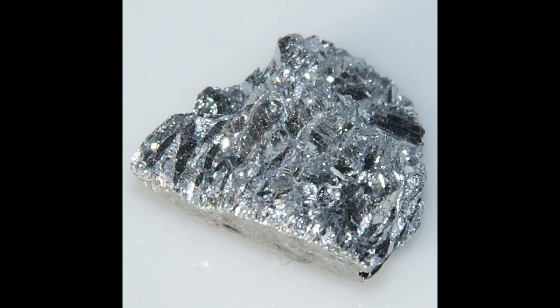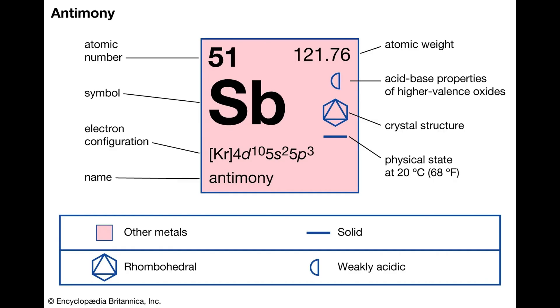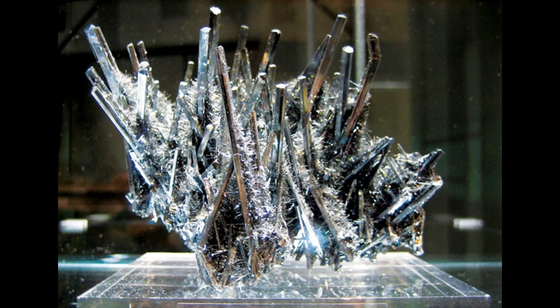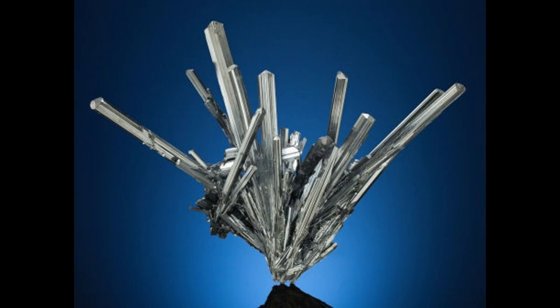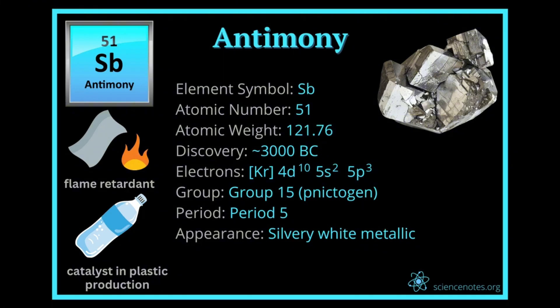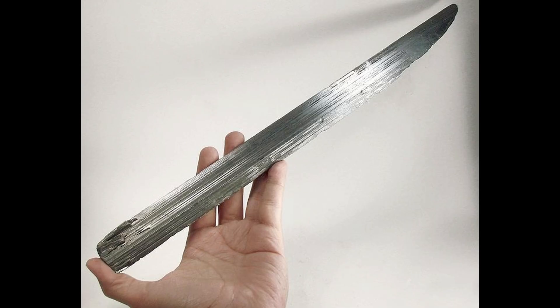Antimony, a critical material in modern industries. Antimony is a chemical element with the symbol SB and atomic number 51. It is a metalloid, meaning it has properties of both metals and non-metals. Antimony is a relatively rare element, making up only about 0.0002% of the Earth's crust. However, it is a critical material in a number of modern industries.